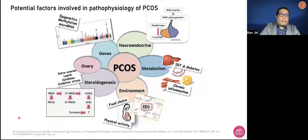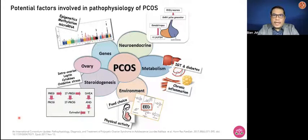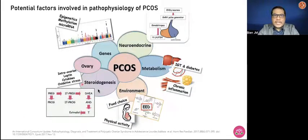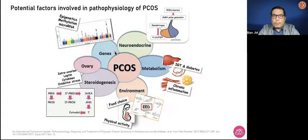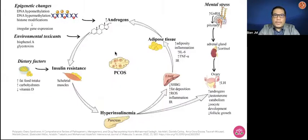In the illustration are potential factors involved in the pathophysiology of PCOS. As you can see in the middle, you have several factors that will affect steroidogenesis. There are environmental factors, there are internal factors that will affect metabolism, and even genetic factors that will cause changes in patients with polycystic ovarian syndrome.